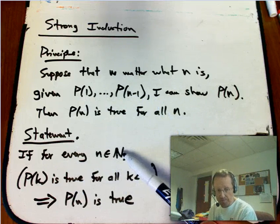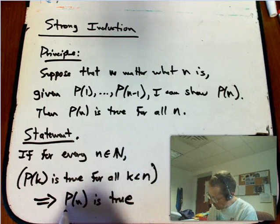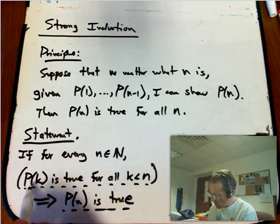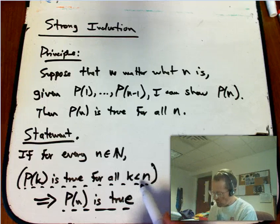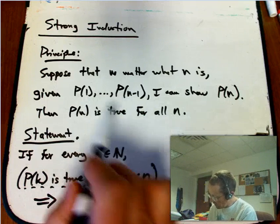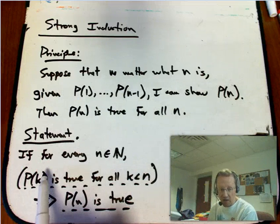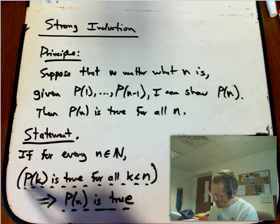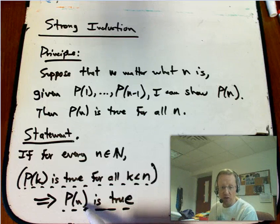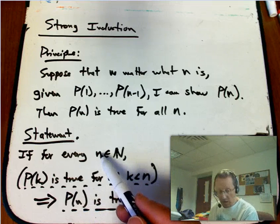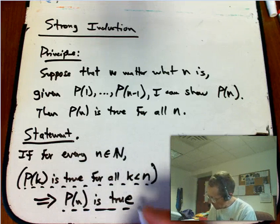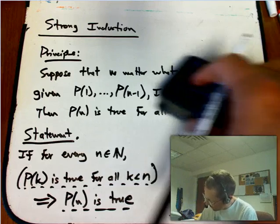So suppose that no matter what n is, that I can prove P(n) with the help of, or with the ability to assume that P(k) is true for all previous k. So that's the P(1) through P(n-1). This is really saying, given P(1) through P(n-1). This is just saying, given that I'm allowed to assume P(k) for all k less than n. If, when I'm allowed to assume that, I can get to the very next one, the next one that I don't know, P(n). Then, in fact, if that's true no matter what n is, if I can always get to the next case given all previous cases, not just the immediate previous case.